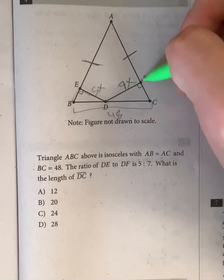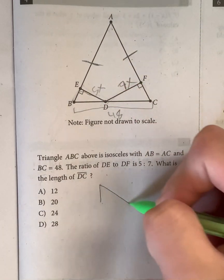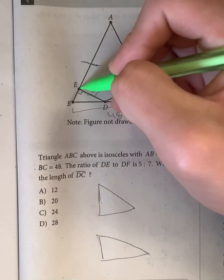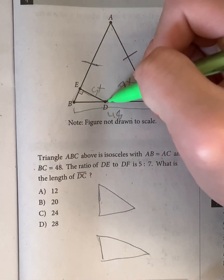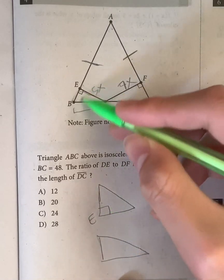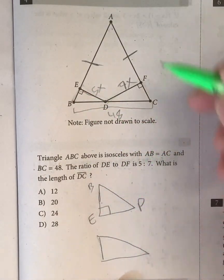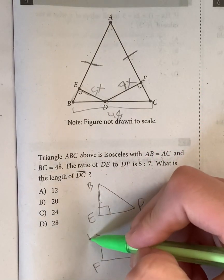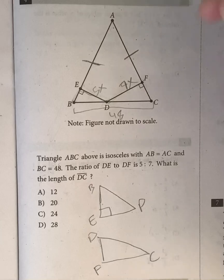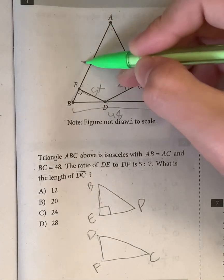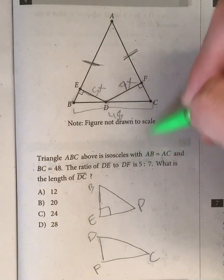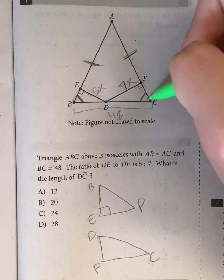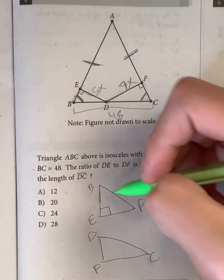So what is DC? Well, looking at these two triangles right here, they both have a right angle. Let me just write down these two triangles. So we have this one right here, EBD, where E is going to be our right angle. Or over here, we have DFC, where F is going to be our right angle. And now looking at it, because you know how in the beginning of the question, it's an isosceles triangle. It means this angle right here has to equal this angle right here. So angle C is equal to angle B.